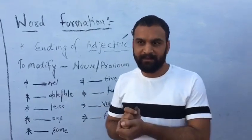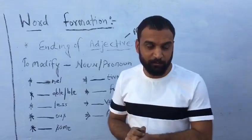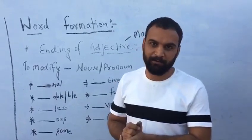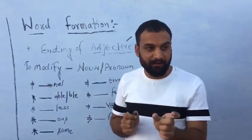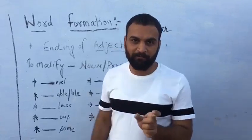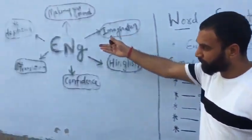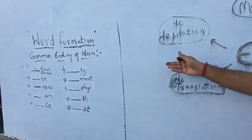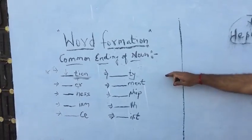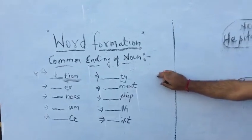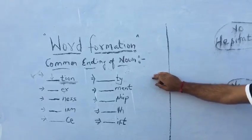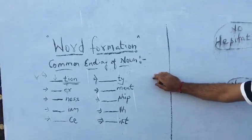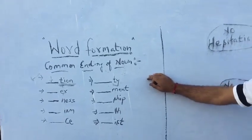As you know, yesterday I was telling you, I was suggesting you to make small examples with the help of nouns. We learned common endings of nouns. As you can see here, the topic is already written on the board because it's hard to wipe. So you can see once again, those who were not able to see yesterday's class, they can see it was the topic yesterday.